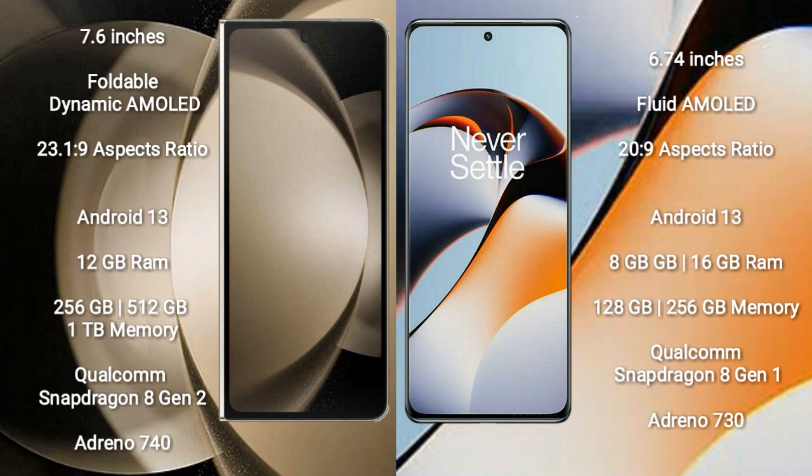Samsung Galaxy Z Fold 5 comes with 12GB RAM and 256GB, 512GB, or 1TB internal storage, a Qualcomm Snapdragon 8 Gen 2 processor, and GPU Adreno 740.